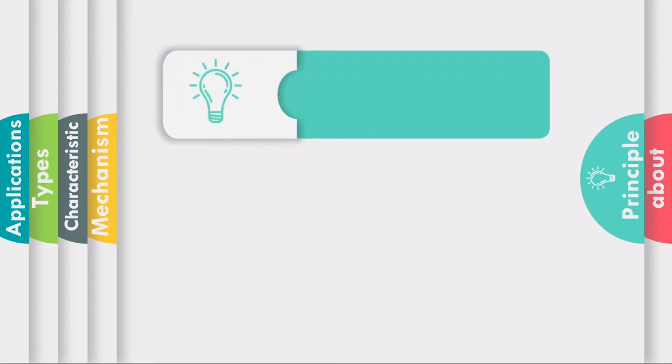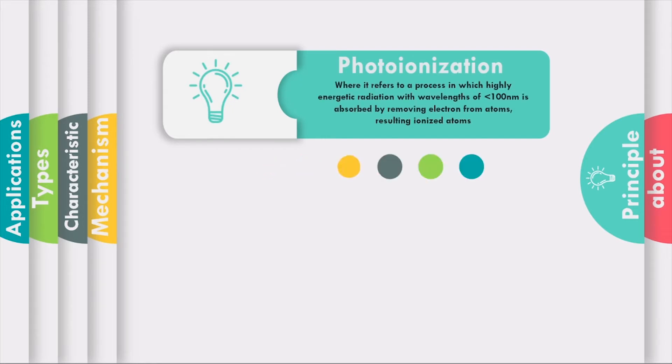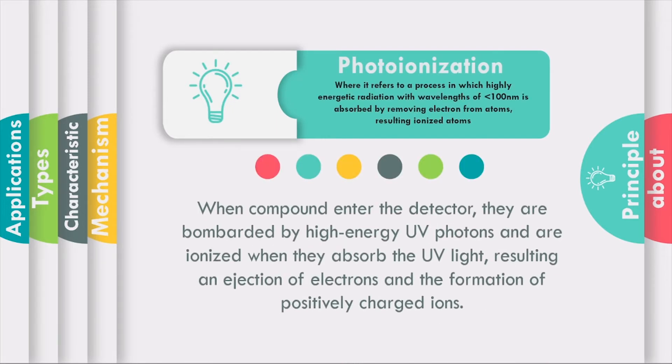The principle behind PID follows the photoionization principle, whereas it refers to a process in which highly energetic radiation with wavelengths of less than 100 nanometer is absorbed by removing electrons from atoms, resulting in ionized atoms.